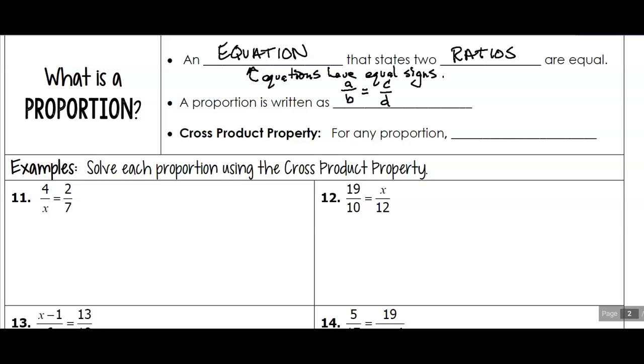And in order to solve these, we're going to use the cross product property. So basically, for any proportion, what we're going to do is we're going to multiply across. So this is really just a shortcut. So we're going to multiply those, and we're going to multiply those. Again, this is just a shortcut for getting rid of our denominators to solve this.